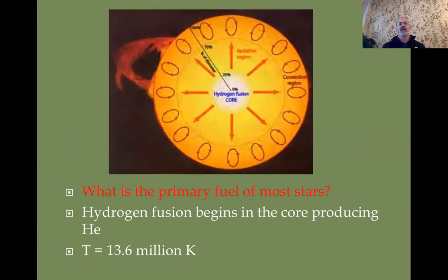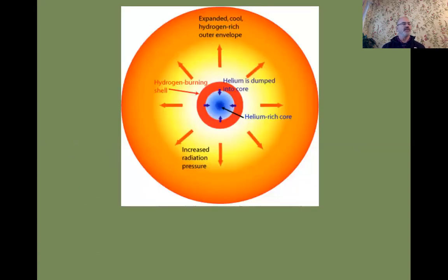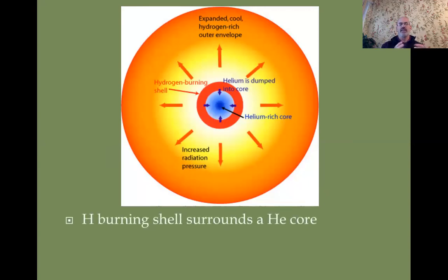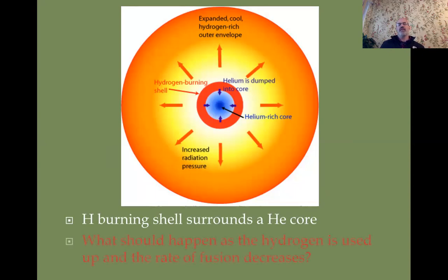If you have a star on the main sequence, it's burning hydrogen. As that hydrogen fuses into helium, a helium core develops at the very center — because hydrogen in the center fuses at the fastest rate — and you'll have shells of hydrogen outside it that are also burning.